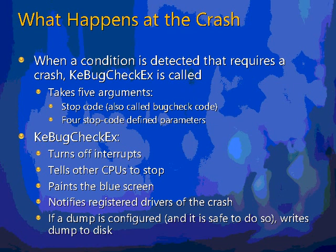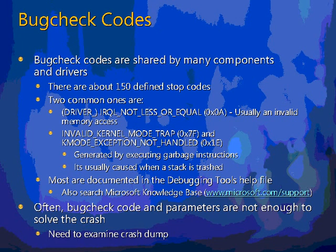Stop codes are also called bug check codes, and there are about 150 defined. But throughout your usage of Windows, you're only likely to ever see the same handful. The two — really three — most common stop codes are: IRQL Not Less or Equal, usually caused by access of an invalid memory location or paged memory that's been paged out when the IRQL is too high; and Invalid Kernel Mode Trap and Kernel Mode Exception Not Handled, usually generated by executing garbage instructions or when the thread's kernel stack becomes corrupted and tries to return off into la-la-land. Most stop codes are documented in the debugging tools help file.